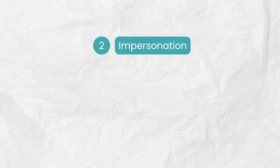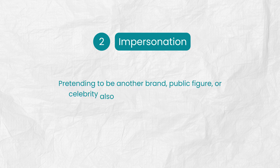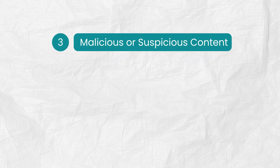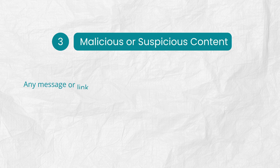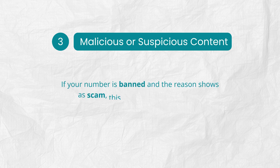The second reason is impersonation. Pretending to be another brand, public figure, or celebrity also results in an immediate ban. Then there's sending malicious or suspicious messages or links. Any message or link that is misleading or contains malware, spyware, or harmful software — even if shared by accident — can trigger restrictions. If your number is banned and the reason shows a scam, this is likely why it happened.